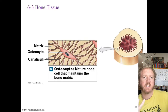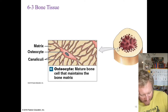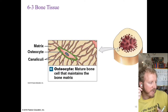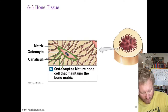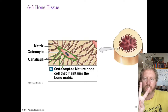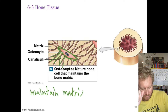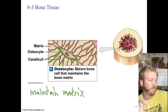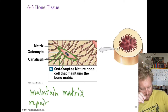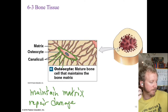Osteocytes are mature bone cells — they don't divide; they're embedded in the solid matrix, like something set in concrete. They live in the lacunae between layers of matrix, with extensions passing through canaliculi. Their two major functions are to maintain the matrix by rebuilding proteins and laying down calcium phosphate minerals, and to repair damaged bone.